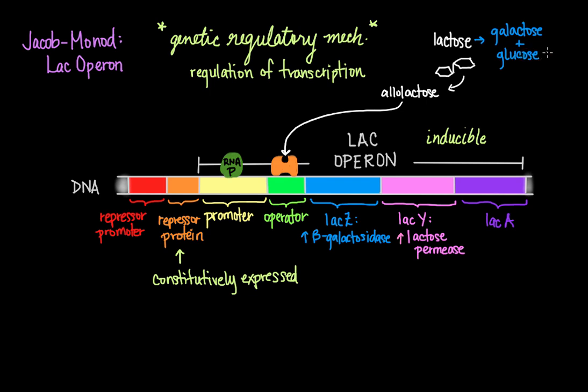If both glucose and lactose are present, the cell prefers glucose. The transport of glucose blocks the transport of the inducer of the LAC operon — lactose — in a process called inducer exclusion. The transport of glucose leads to the formation of a protein intermediate that binds to lactose permease and prevents it from bringing in more lactose. This leads to decreased lactose, which causes decreased repressor dissociation, so the repressor latches back onto the operator and prevents transcription of the LAC operon genes.